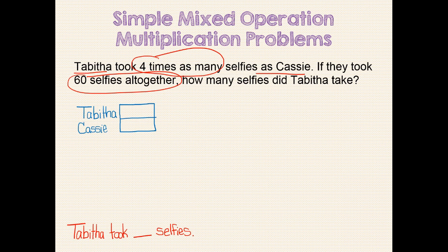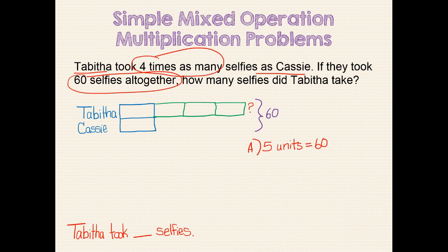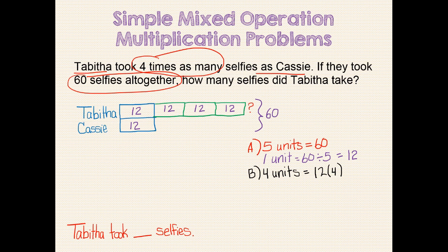The base unit bar is one time as many, this is two times as many, three times as many, and four times as many. We are told that they took 60 selfies all together, so we should bracket the total units and show that. We are asked how many selfies Tabitha took, so our question mark should go here. Now we are ready to let our model drive the math. If the total includes five units representing 60 selfies, then one unit equals 60 divided by 5, which equals 12. So each unit bar equals 12 selfies. Since Tabitha has four unit bars, four units equals 12 times 4, which equals 48. Tabitha took 48 selfies.